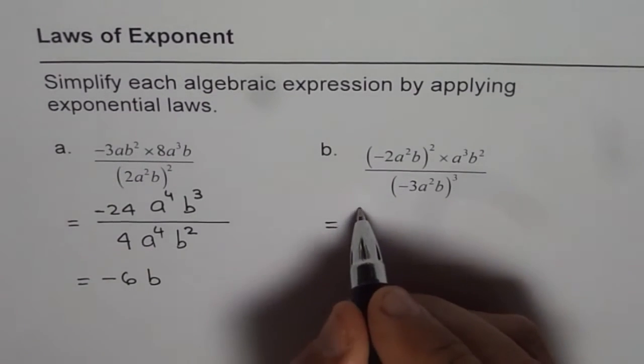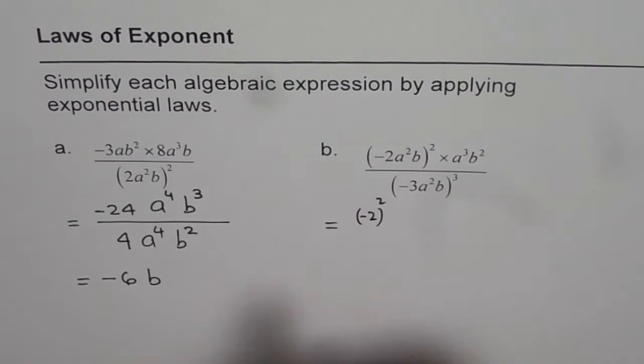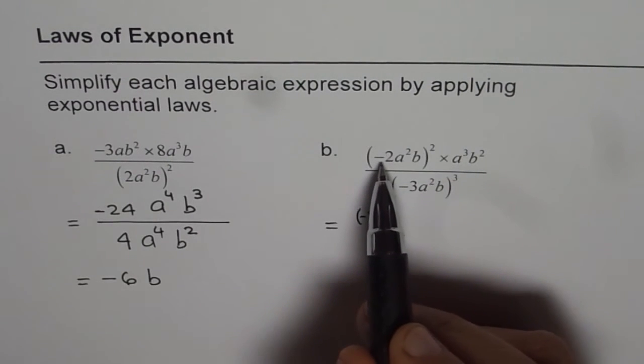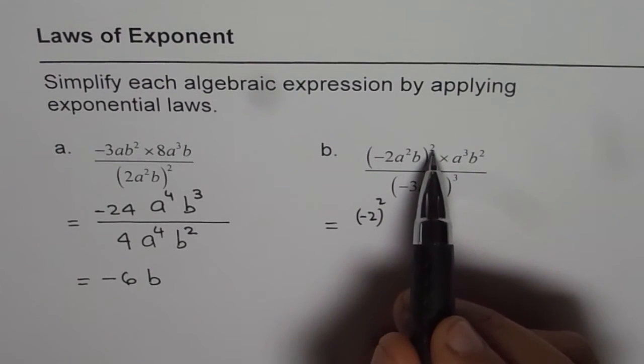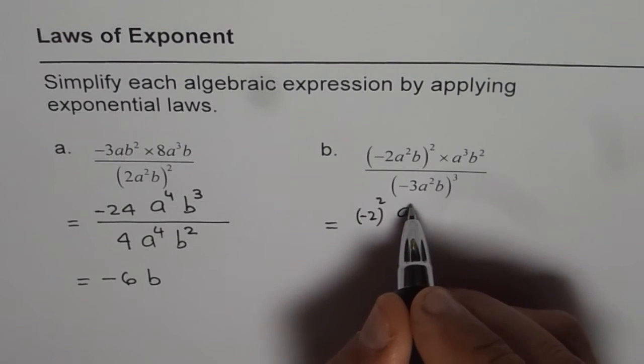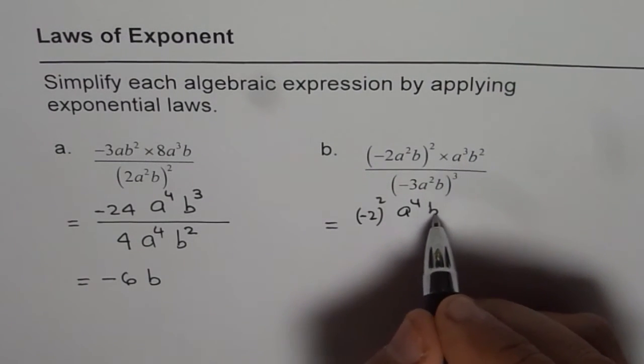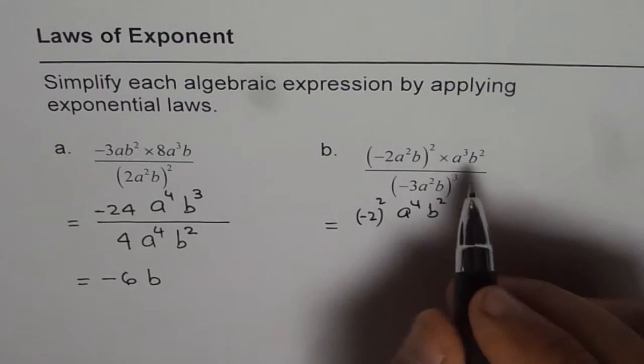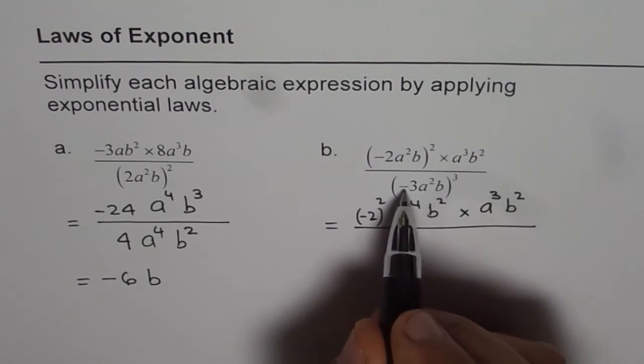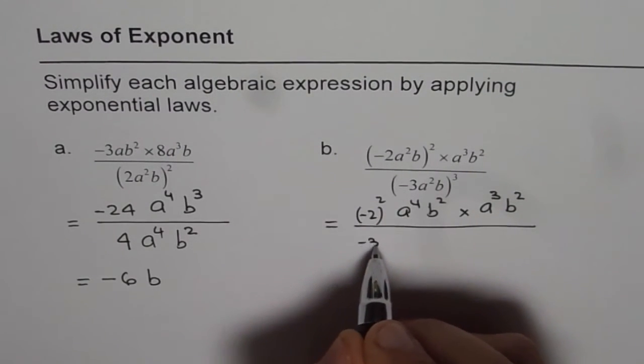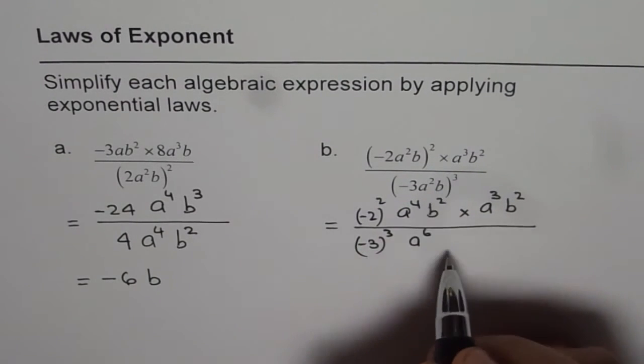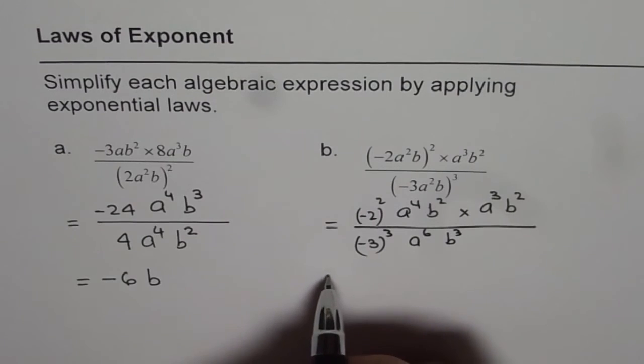So minus 2, we get minus 2 whole square. That is using the exponent, right? So it is power of power. So all the things inside will get the power of 2. a squared to the power of 2 gives us a to the power of 4, b squared, times a cubed b squared. And denominator is minus 3 cubed. a squared, 2 times 3 is 6, so a to the power of 6, b to the power of 3.